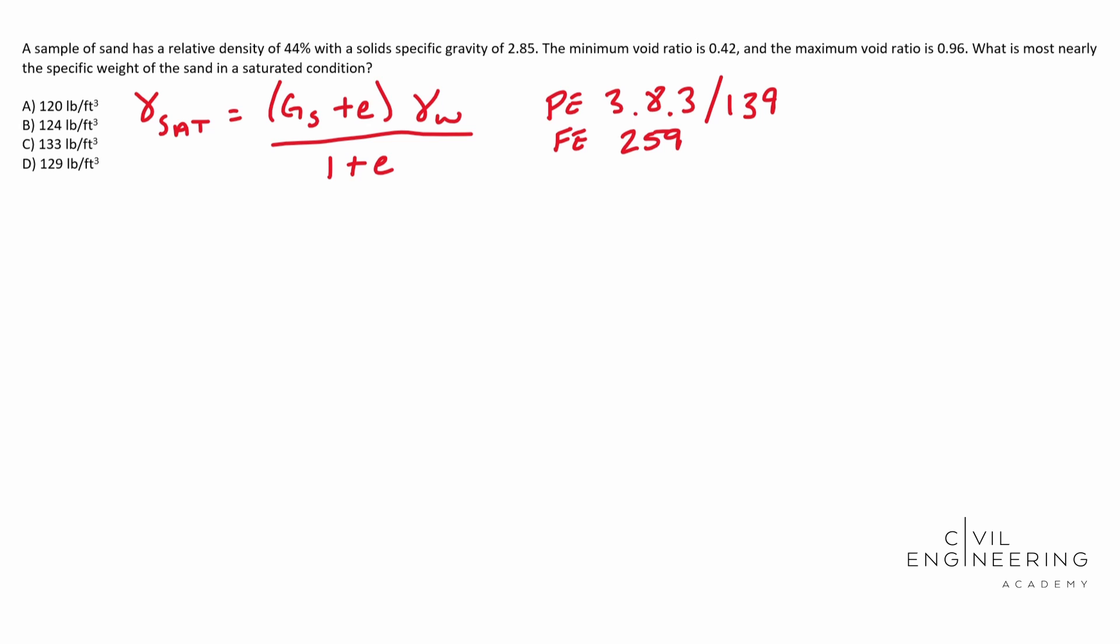So we noticed that we have our specific gravity. We know our gamma water, but what we don't know is the E. So we're going to have to find an equation that we can solve for E for. And ultimately, if you look at the hints given in the problem, we know that it's going to have something to do with the relative density. So what we can do is we can use control F to find our relative density formula.